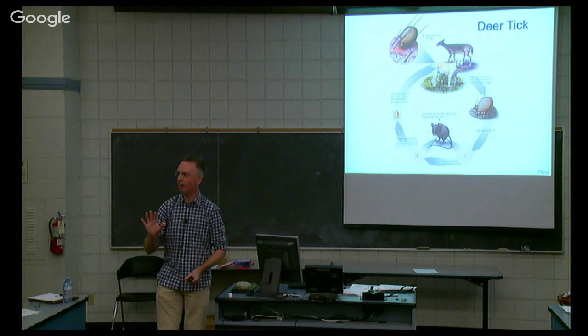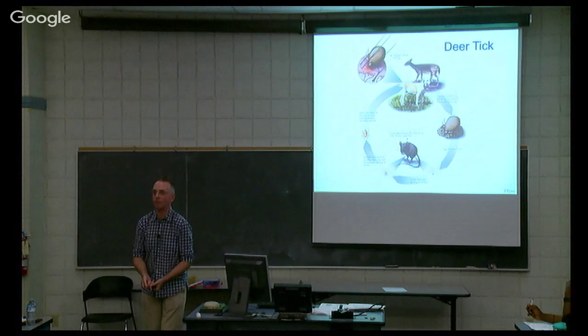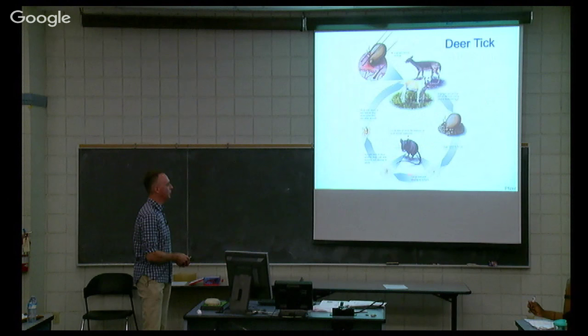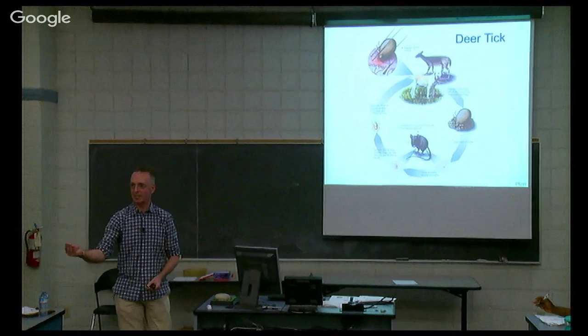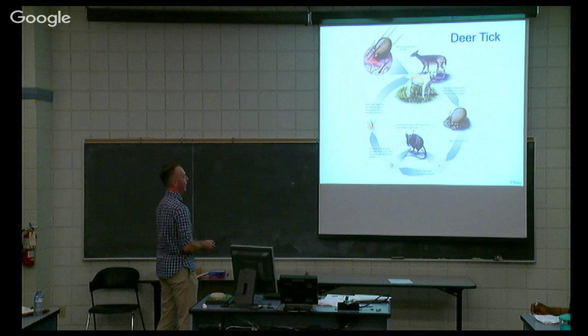If this tick feeds on a rodent that's not infected, it doesn't get infected. However, it then drops off into the environment, molts to a nymph, and that nymph also feeds on rodents. So if the tick didn't get infected as a larva, there's a chance it could get infected as a nymph. That then drops off, molts to an immature adult, and attaches onto you, your dog, or deer. Do you need deer for that life cycle to become endemic? The answer is actually no.